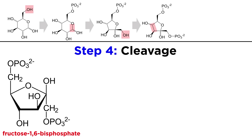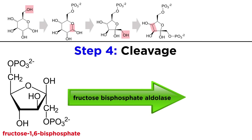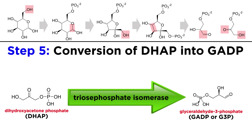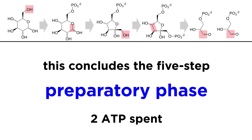Now this molecule is ready to be cleaved into two smaller ones. Fructose-bisphosphate aldolase, a lyase enzyme, will split fructose-1,6-bisphosphate into a molecule of glyceraldehyde-3-phosphate, or GADP, and a molecule of dihydroxyacetone phosphate, or DHAP. The DHAP will be converted into another molecule of GADP by the enzyme triosephosphate isomerase, which leaves us with two molecules of GADP. That's the end of the five-step preparatory phase, with two ATPs spent to achieve the two phosphorylations.